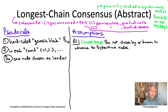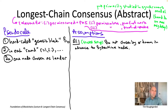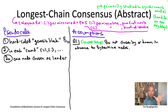We need a couple of assumptions about leader selection in step 2A of longest chain consensus. Unlike our first trusted setup assumption, these next assumptions are really important to enforce in any concrete instantiation of the protocol.